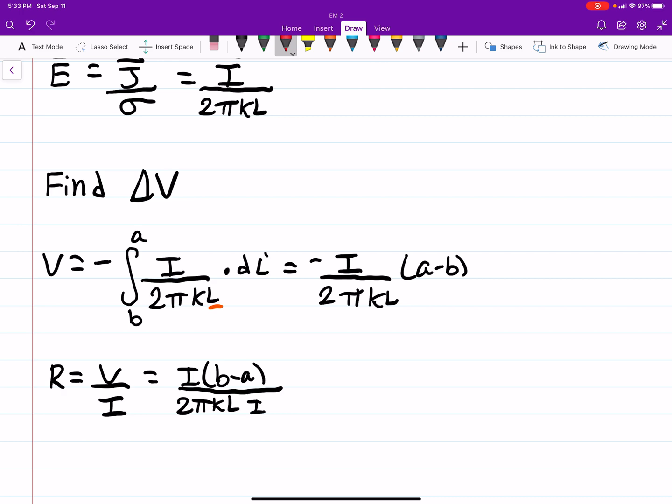And times the current. So you can see the current actually ends up cancelling out. And you just get B minus A over 2 pi times that constant times the length.